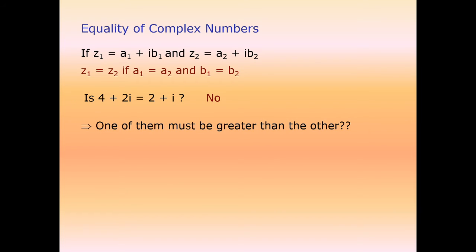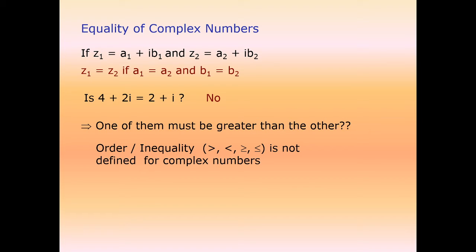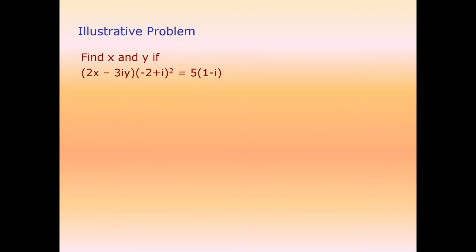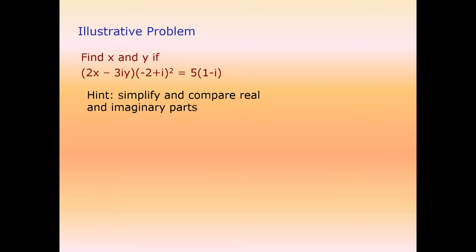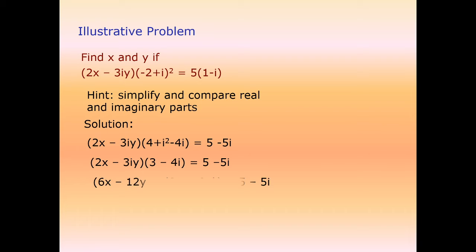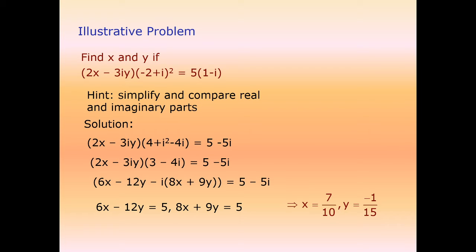Unlike real numbers, order or inequality is not defined for complex numbers — we cannot say one complex number is greater than another. To find x and y from a complex number equation, simply compare the real and imaginary parts separately. For example, equating real and imaginary parts gives you x and y directly.